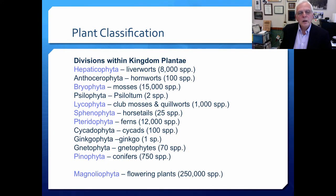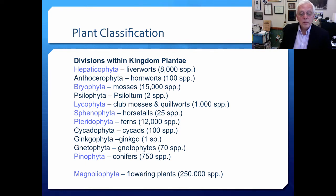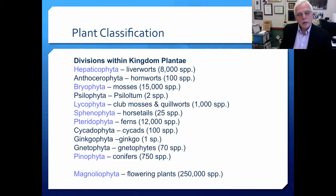There are several divisions within the kingdom Plantae. The ones colored in blue are those represented in aquatic systems: Hepaticophyta, Bryophyta, Lycophyta, Sphenophyta, Pteridophyta, and Pinophyta. Some divisions are not represented in aquatic ecosystems at all. I also left out the Magnoliophyta — the flowering plants — which are the most species-rich, embracing something like a quarter of a million different species of plants. It's just a stunning variety, and it seems like every year science discovers more and more species of flowering plants across the planet.